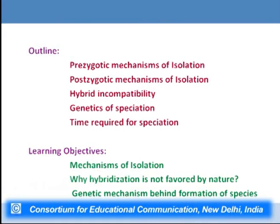Now I will be talking about speciation — how different species come into existence and what various mechanisms cause different populations to become isolated from each other so that they evolve into separate species. The lecture will discuss how species are formed, the different mechanisms of isolation which cause populations to evolve into species, why there is incompatibility in hybrids — why hybrid forms between two different species are not viable or fertile — and the genetics of speciation. The learning objectives are to understand the mechanisms of isolation, why hybridization is not favored by nature, and the genetic mechanism behind formation of various species.